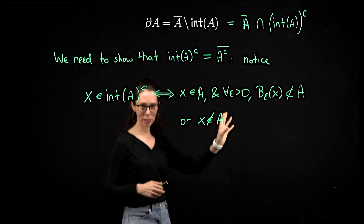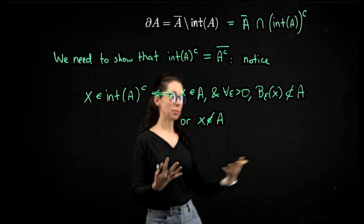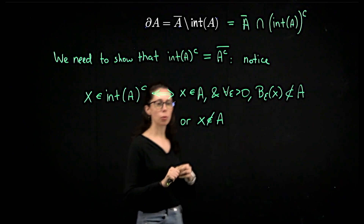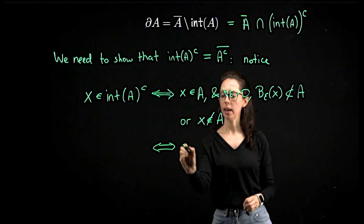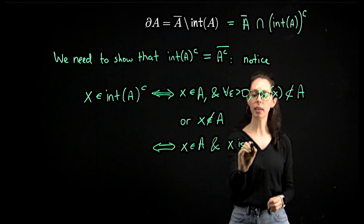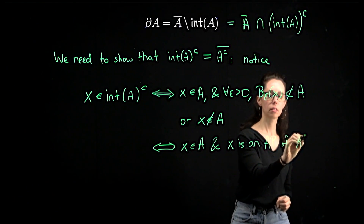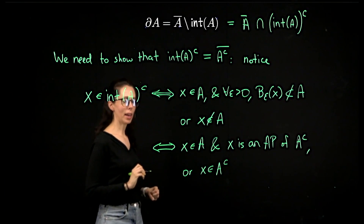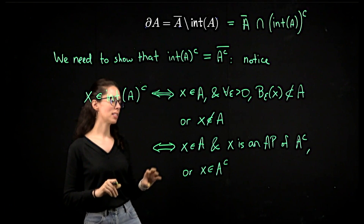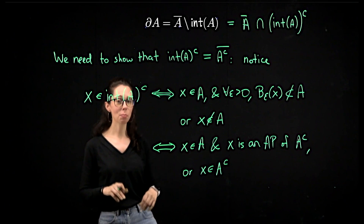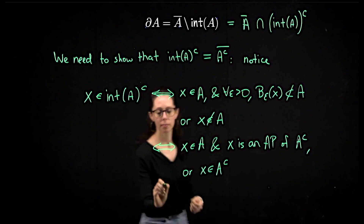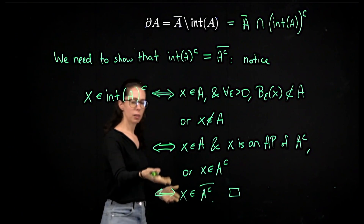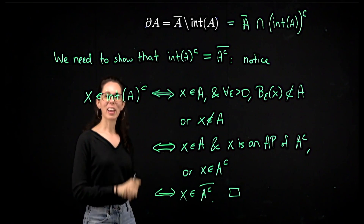When I was writing this, I alluded to the next realization: every neighborhood of X scoops up something from A complement. Since X is in A, that's enough to know X is an accumulation point of A complement. So we have: X in A and X is an accumulation point of A complement, or X is in A complement. That's one way of saying X is in the closure of A complement. Reading it bottom to top, the backwards direction also works. So we're done. Hope you enjoyed this look at the boundary of a set.